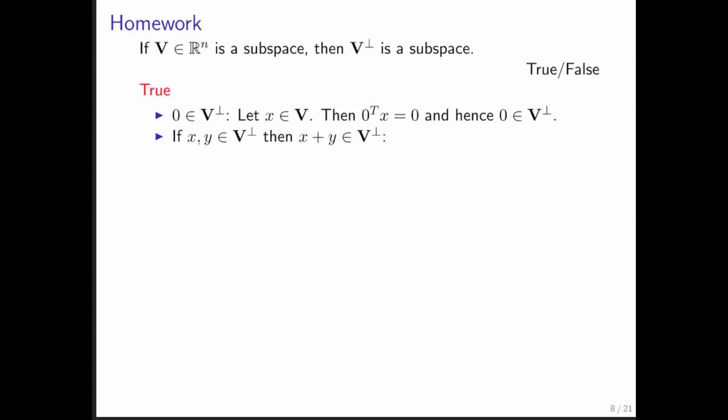What if we're given two vectors x and y, both of which are in V perp? What we would like to show is that the sum of those two vectors is also in V perp. Well, how do we show that? We take x and y to be in V perp, and we take an arbitrary vector z in V, where we put no restrictions on what z is at all.